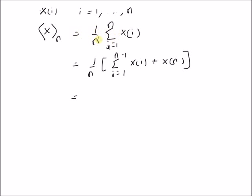From the original definition, this is equal to 1 by n, by multiplying and dividing with n minus 1. For this summation, we have n minus 1 by n minus 1 times summation j equal to 1 to n minus 1, x(i) plus x(n).